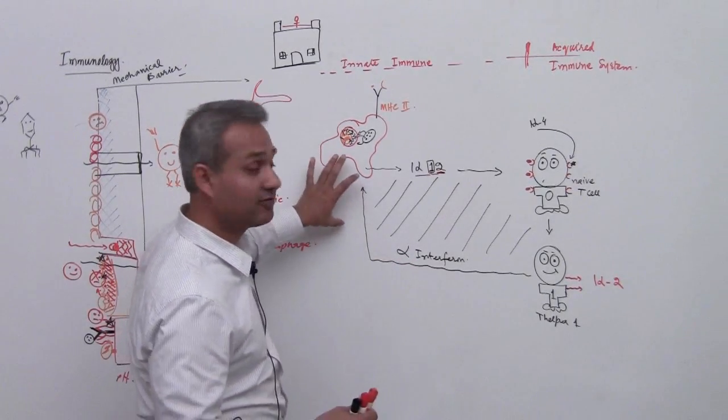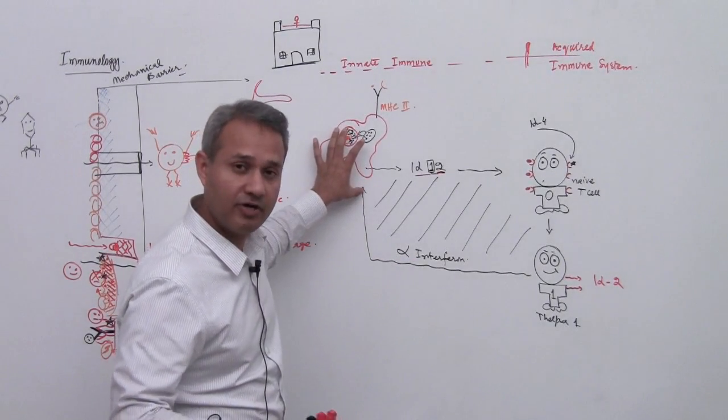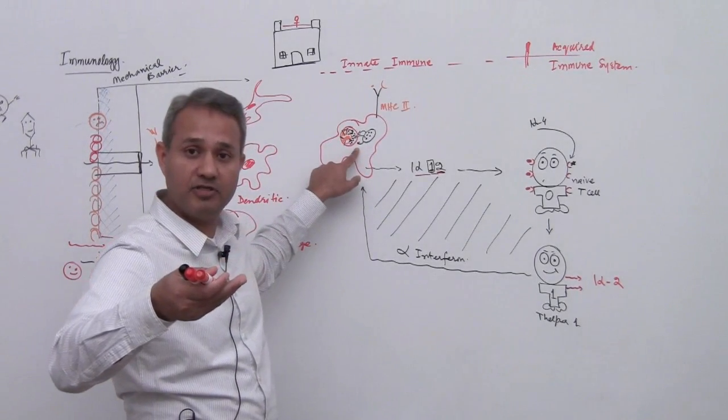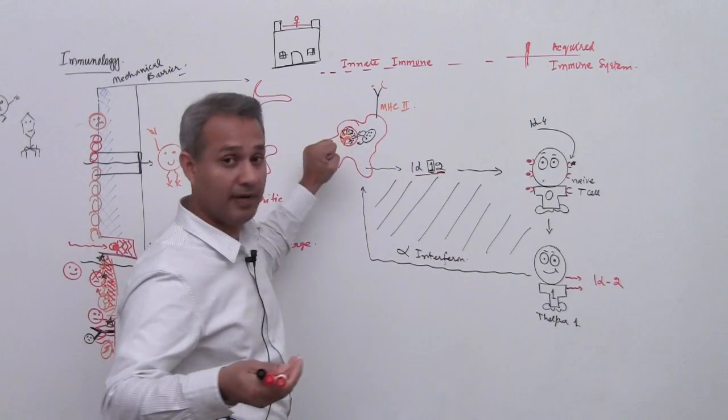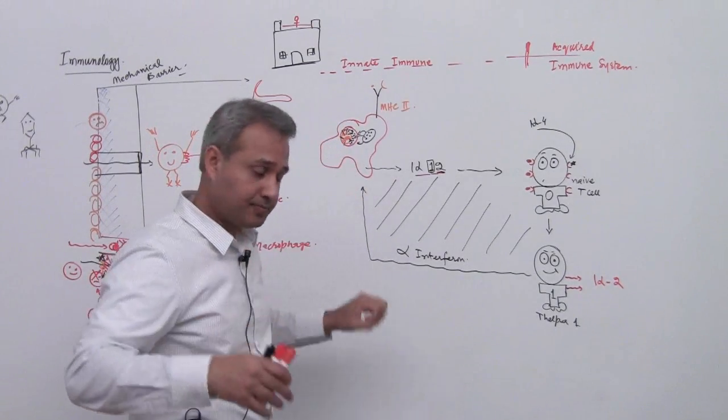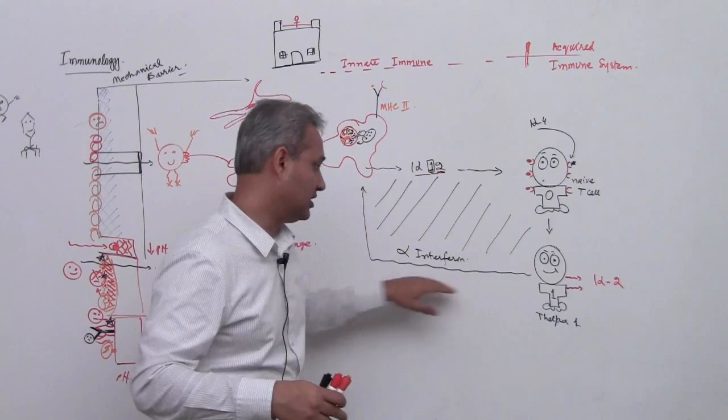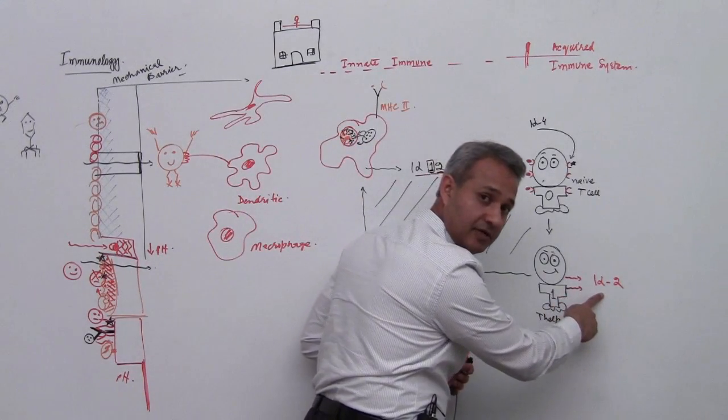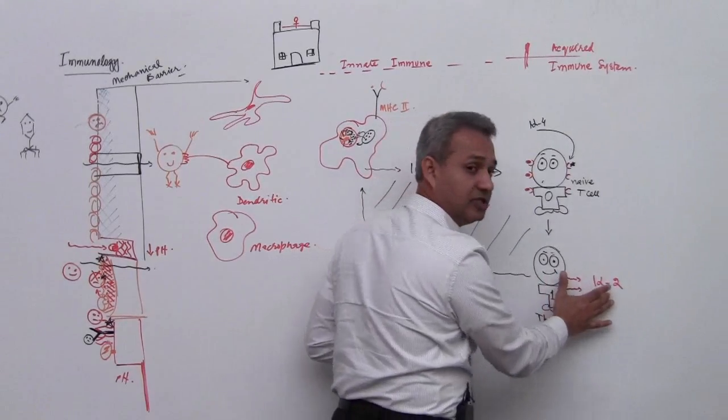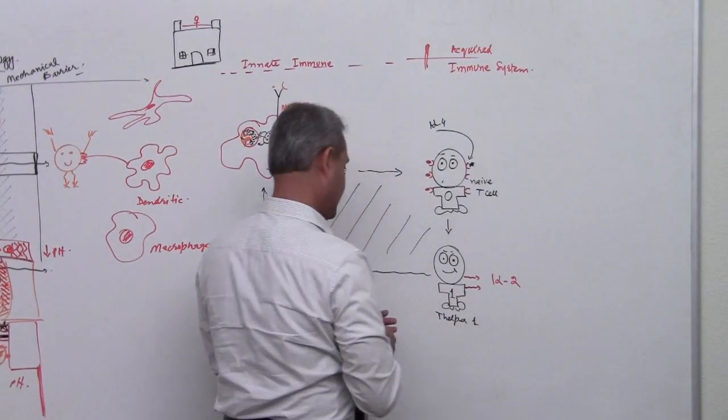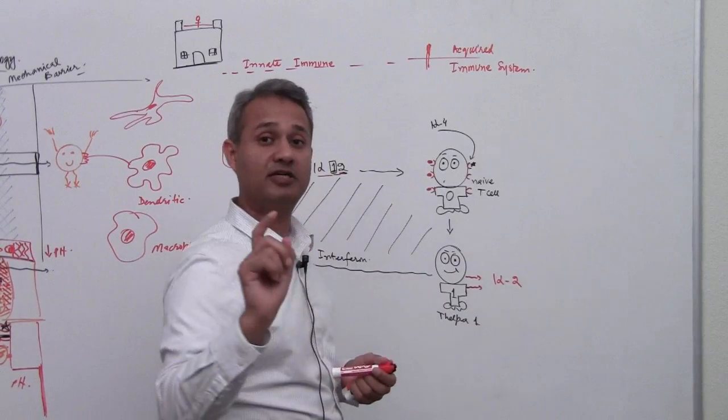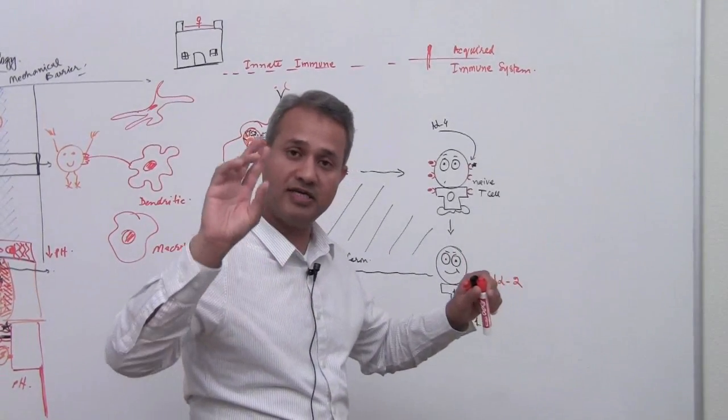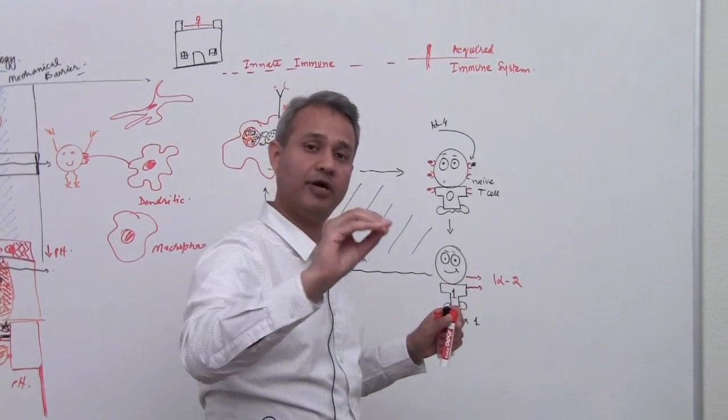IL-12 coming from the macrophage, gamma interferon coming from the T helper 1. What does this gamma interferon do to the macrophage? At this time we would just say it enables it, it enhances the activity of macrophage to capture more pathogens and kill them. We will talk more, it has multiple functions. Now if we focus here for a second, the IL-2 which is released then acts on another T cell, part of acquired immunity. All T cells and B cells are part of acquired immunity.